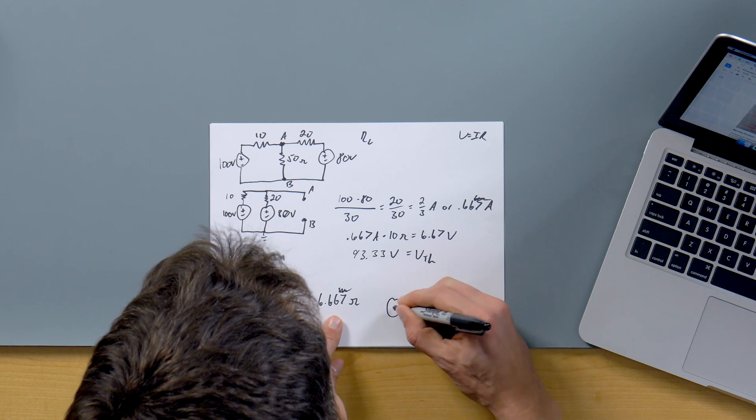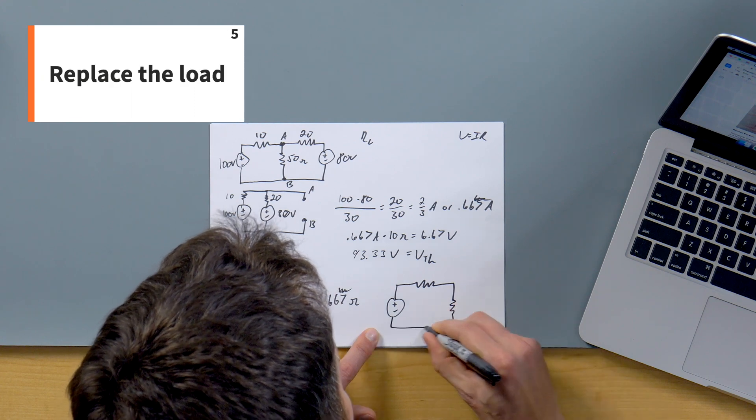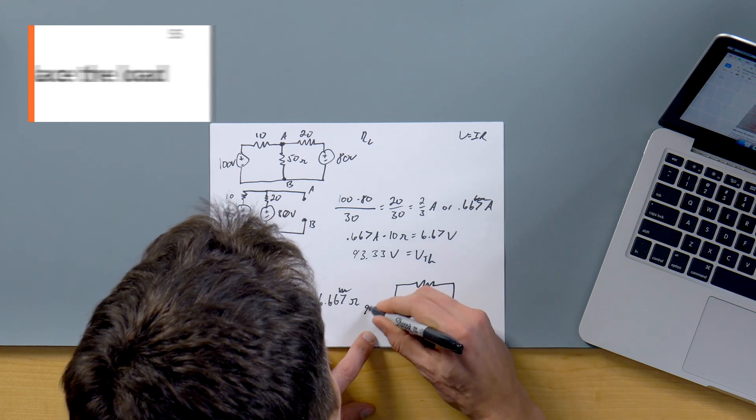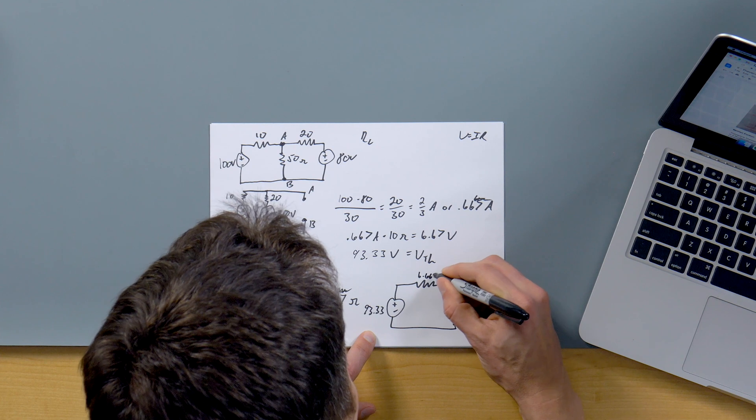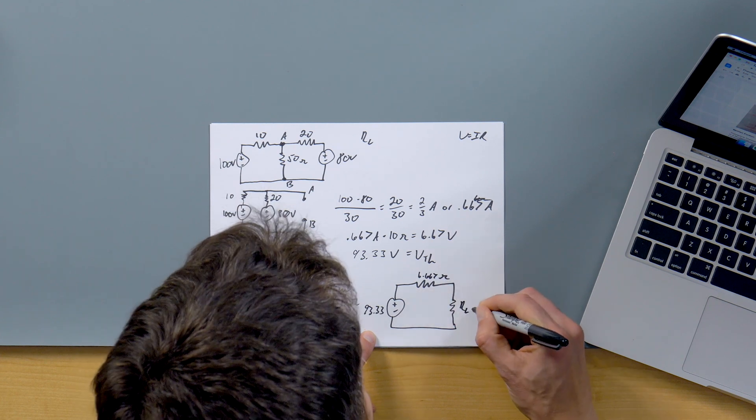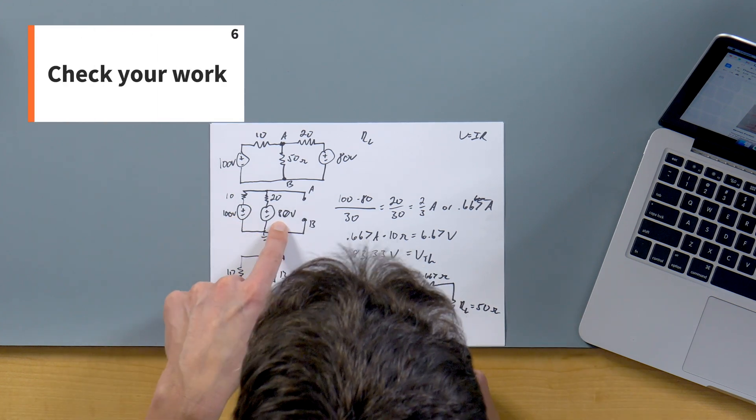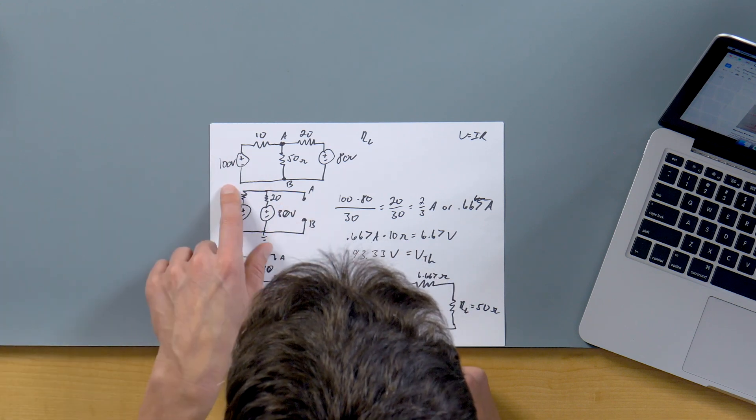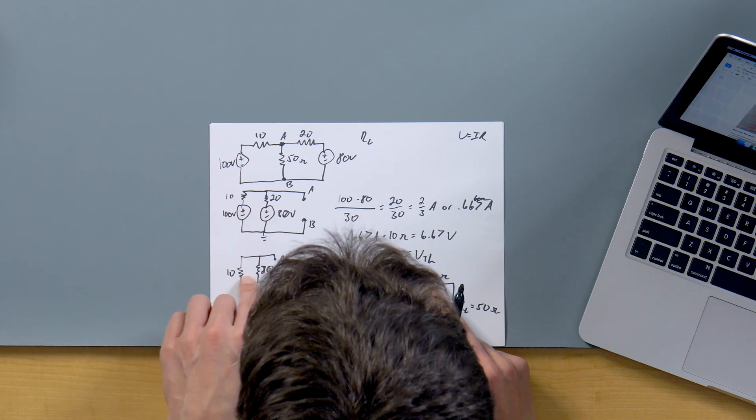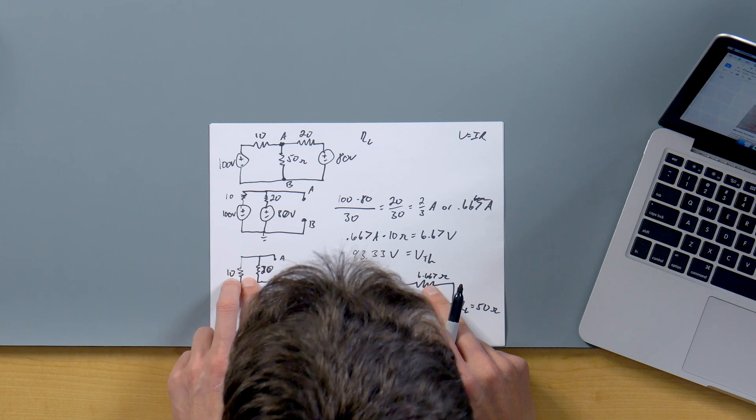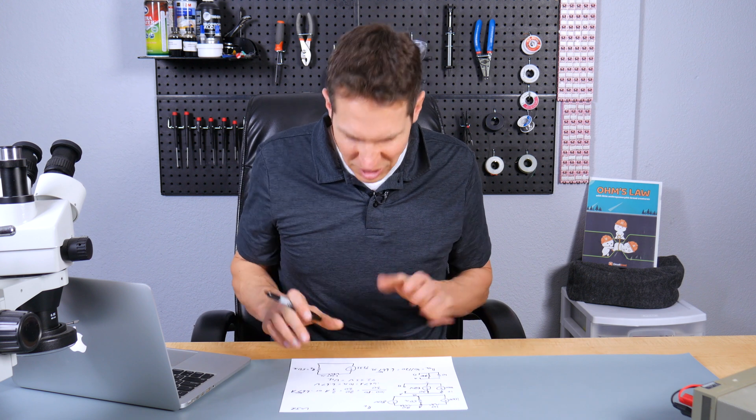So step five is basically we take those things and we throw the load back in, and we have 93.33 and we have 6.667 ohms, and then we have our R load, which in this case is just 50 ohms. All right, sanity check. 93.33, that makes sense because it's less than 100, more than 80, and so we were anticipating something in that range. The 6.667 ohms, and that also makes sense because anytime you take two resistors and put them in parallel, the equivalent resistance is going to be lower than the lowest of those resistances, so that seems reasonable.